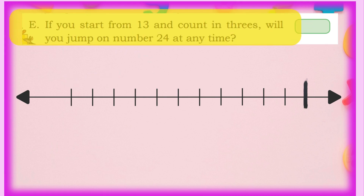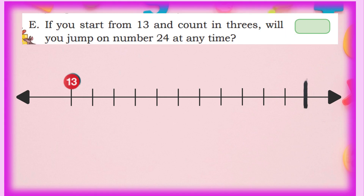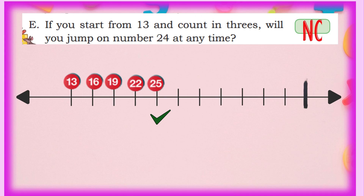Next: if you start from 13 and count in 3s, will you reach 24? Starting at 13 and adding 3: 16, 19, 22, 25. After 22 we add 3 to get 25, which is greater than 24. So 24 will never appear in this counting. The answer is No. In this way we have completed this part.